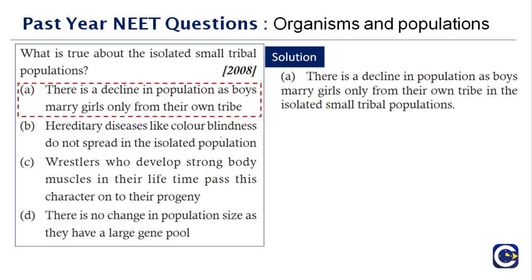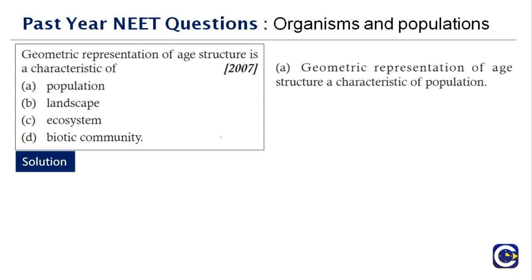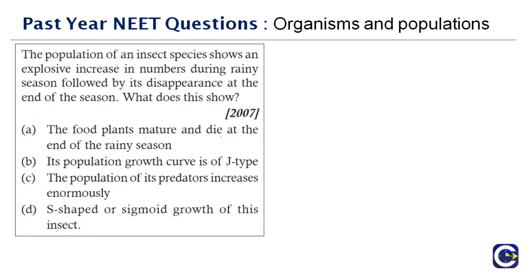Next question: geometric representation of age structure is a characteristic of — we just discussed that natality, mortality, and sex structure contribute to the characteristics of population. So once again, the answer is option A — it is a characteristic of population.